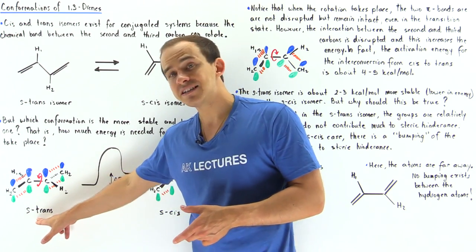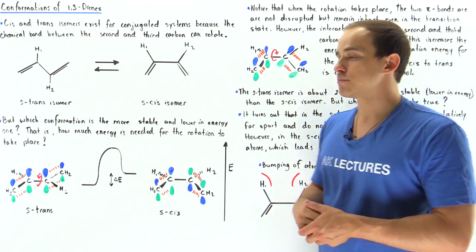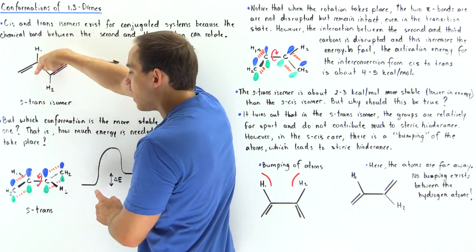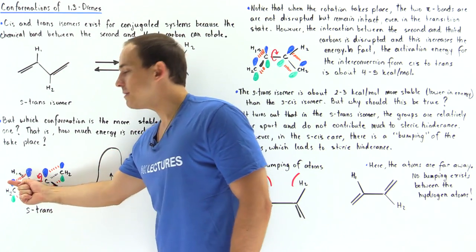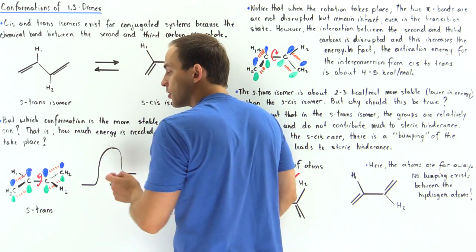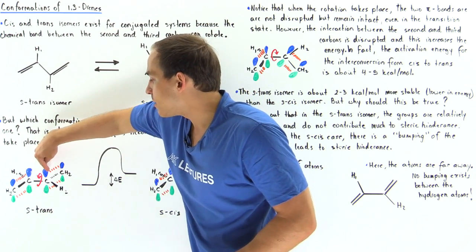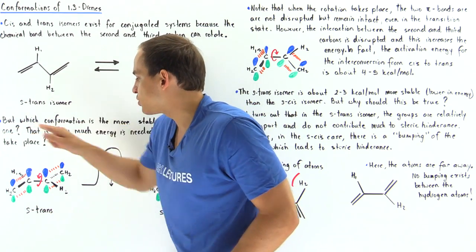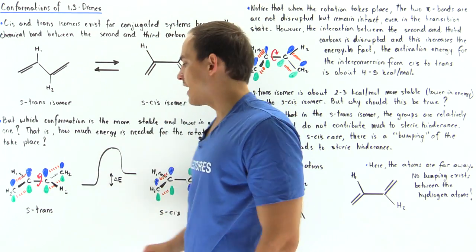This is the orbital diagram of the S-trans and this is the orbital diagram of the S-cis isomer of 1,3-butadiene. We have the first pi bond between the first and second carbon coming out of the board. The bond between the second and third carbon — the bond that rotates — is on the plane of the board. The pi bond on the third carbon is going into the board. H1 is going into the board and H2 is coming out of the board — that's why this is our S-trans.